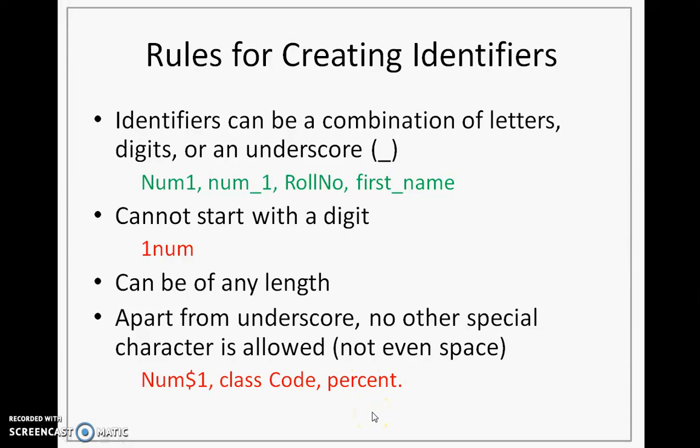In general, you should understand that Python is a case-sensitive language. And therefore, when you are forming identifiers, the uppercase letter and the small case letter is treated differently by Python. That means that if I have named a variable as num with n small and another variable again as num with n capital, these are two different identifiers for Python.